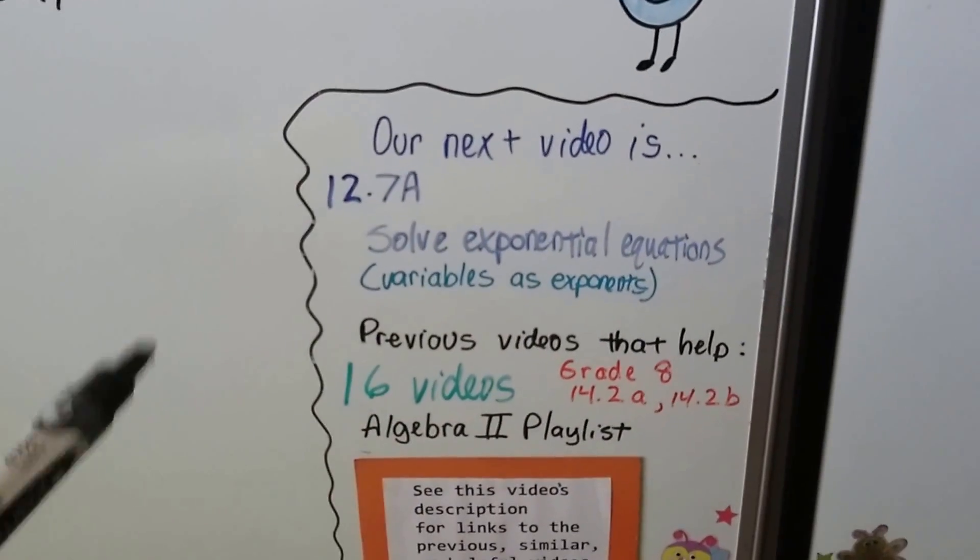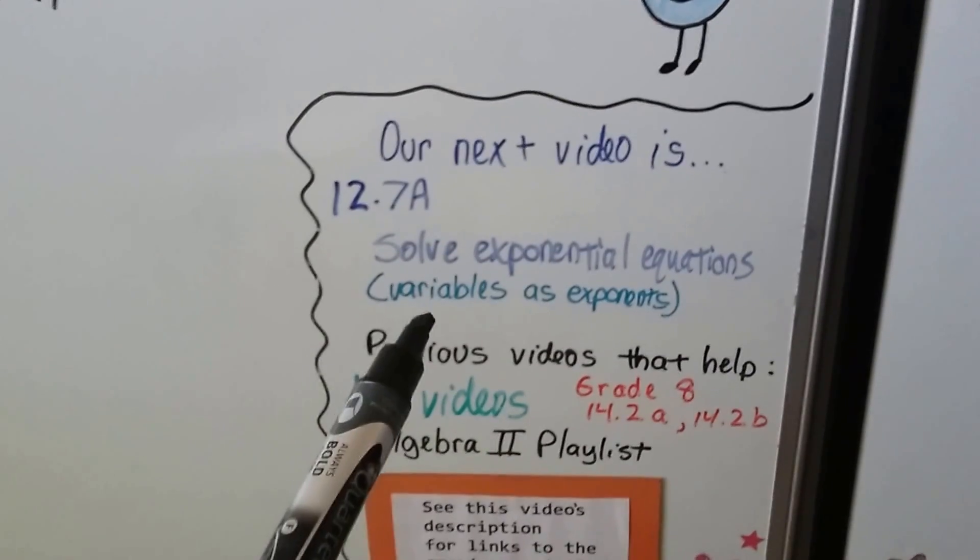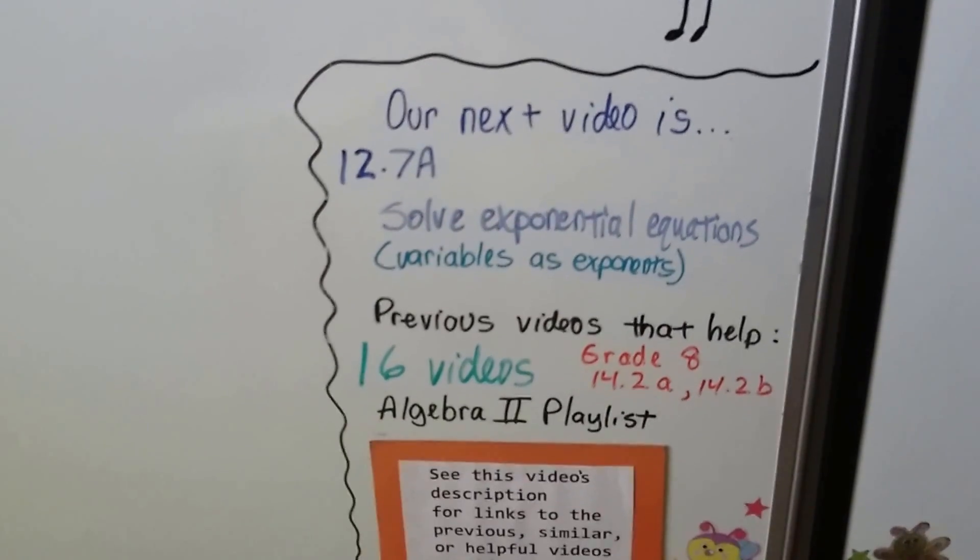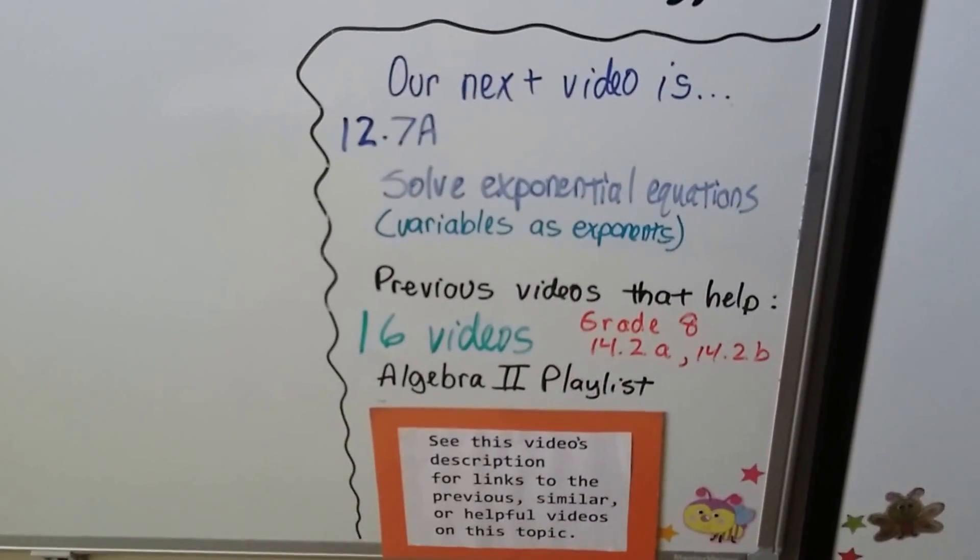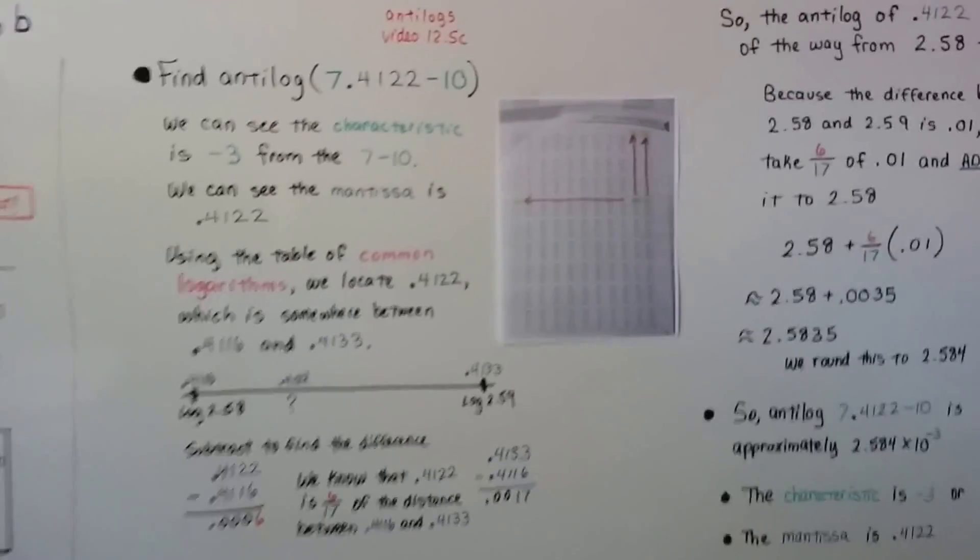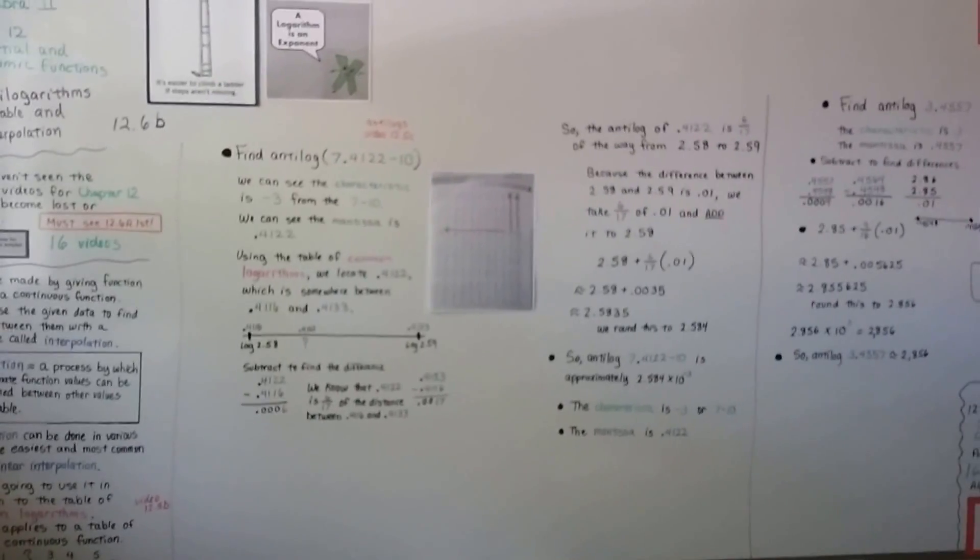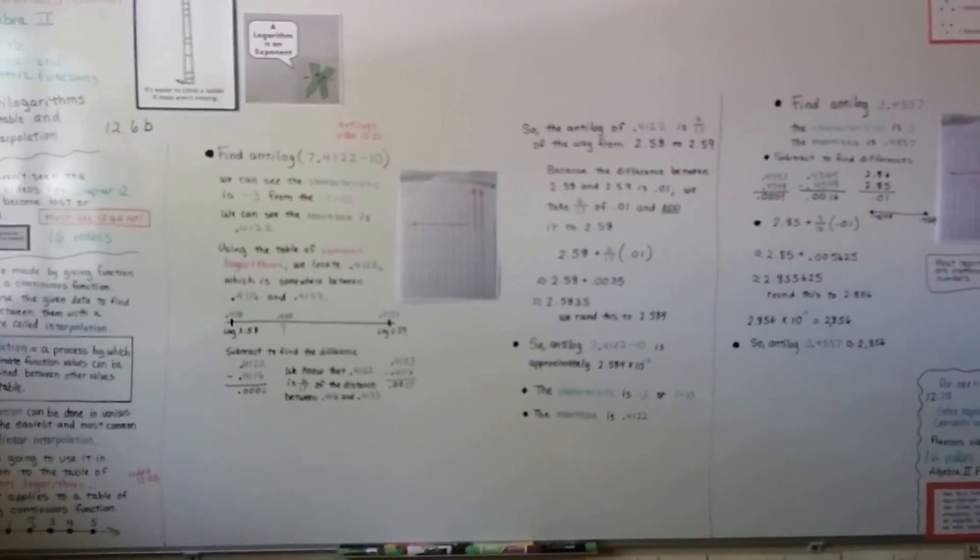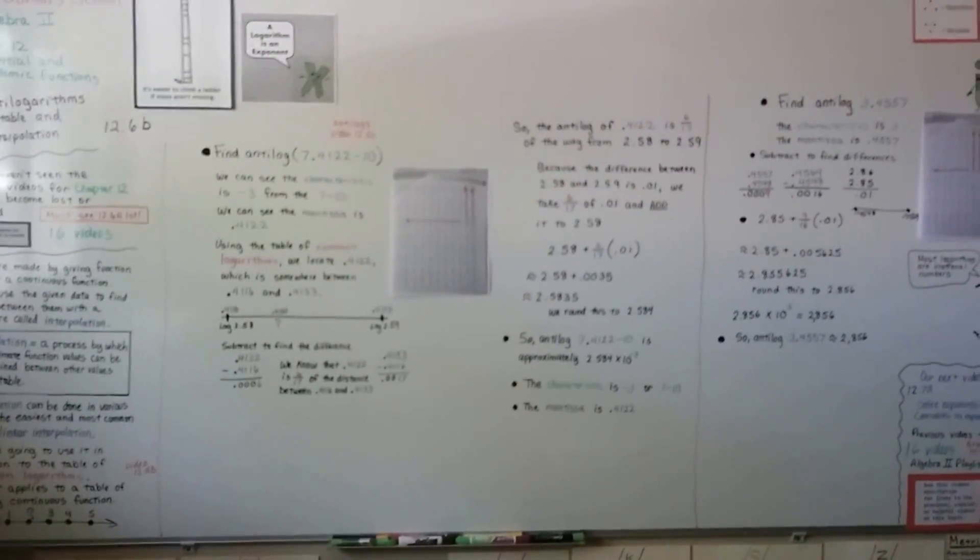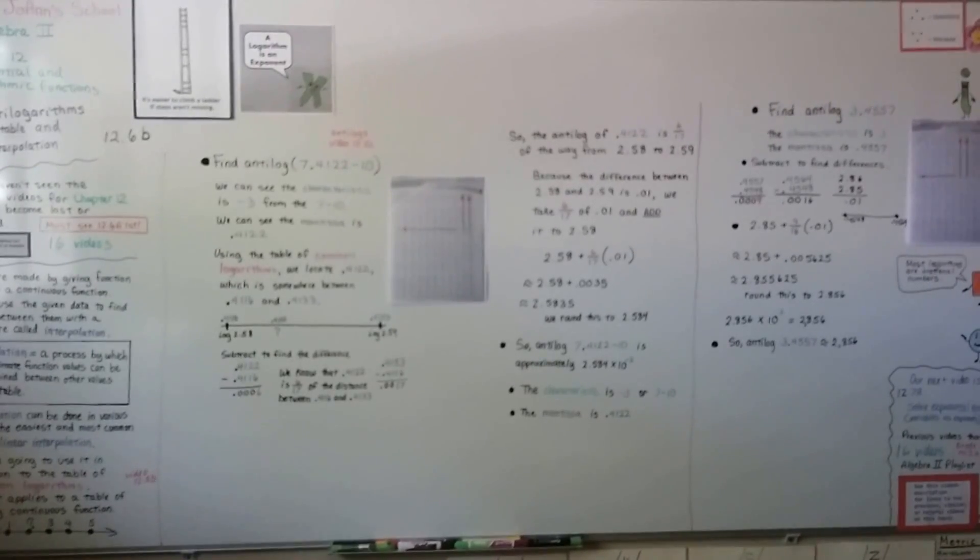Our next video is 12.7a, and we're going to solve exponential equations. That means they have variables as exponents. We've got 16 previous videos. There's going to be links to those grade 8 videos. I'm going to add this to the Algebra 2 playlist. And, we're getting close to the end of chapter 12. And, that's going to be the end of this playlist for now, because I'm not going to get into finite math and the trigonometry.